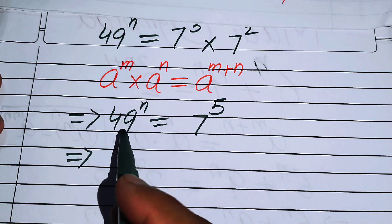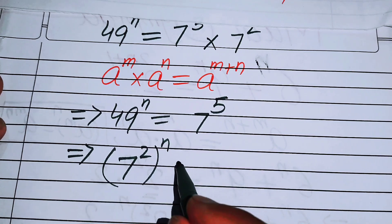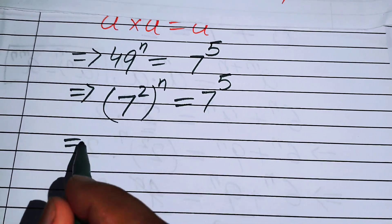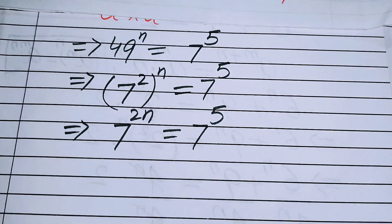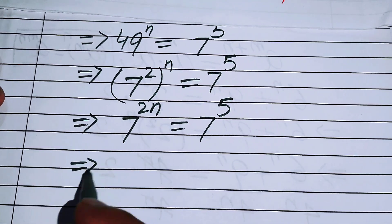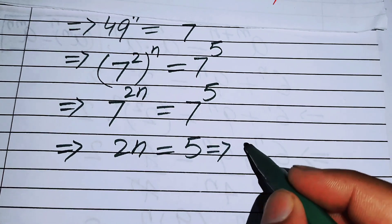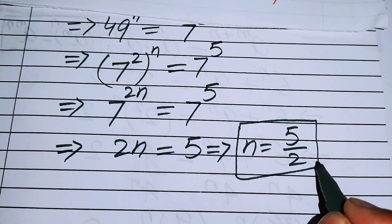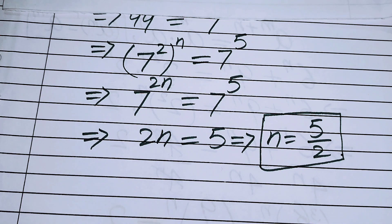On the left-hand side, we write 49 as 7 squared, so 49^n becomes 7 to the power of 2n. Since the bases on both sides are the same, we equate the exponents: 2n equals 5, which gives n equals 5 over 2. So n equals 5/2 is the final answer. Thank you so much for watching — please subscribe to my channel for more exciting videos.